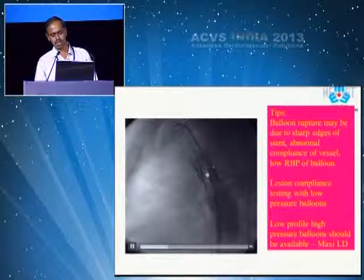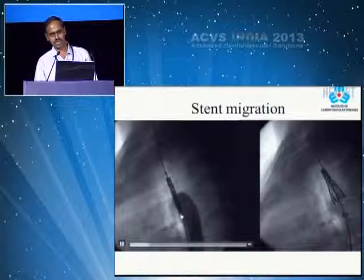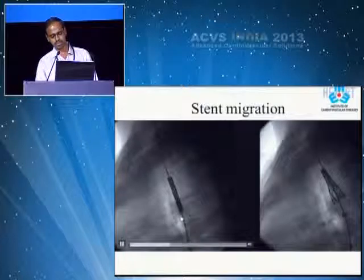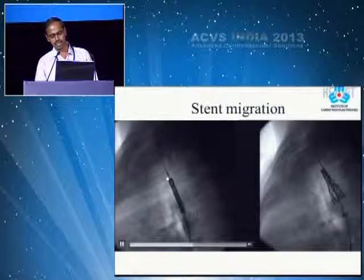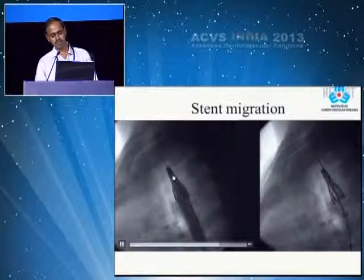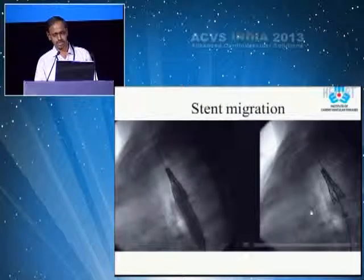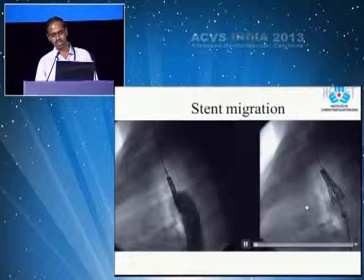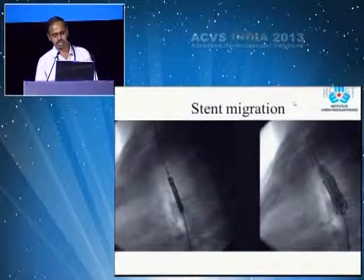Stent migration is another problem, especially on the transverse aortic arch. You can see the stent perfectly positioned, but as the balloon inflates, the stent is actually getting milked into the arch — this is melon-seeding of the balloon. To address this, pass a very small balloon across, slowly inflate it, and drag it back down into the correct position.